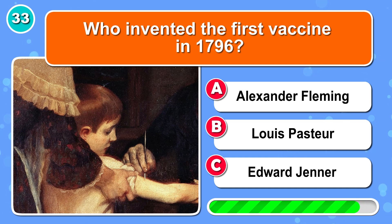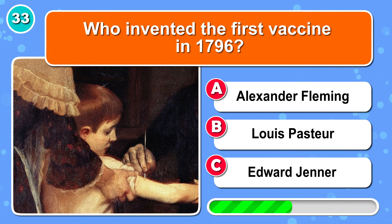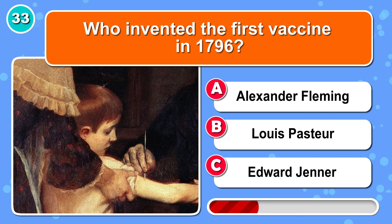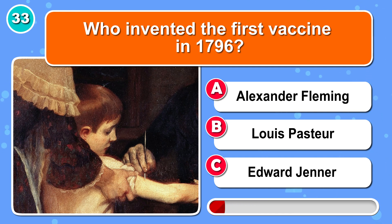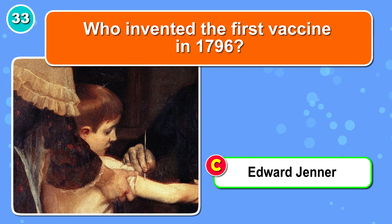Who invented the first vaccine in 1796? It was C: Edward Jenner.